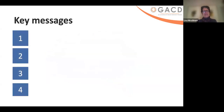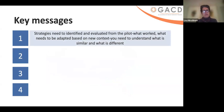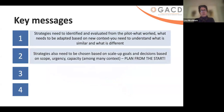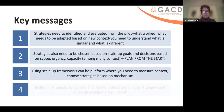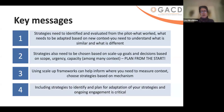Four key messages: Strategies need to be identified and evaluated from the pilot — what worked, what needs to be adapted, and based on the new context, what needs to be similar, what's different, and what needs to change. Strategies also need to be chosen based on your goals and decisions based on scope — is this for everybody, just in urban settings, the urgency (remember COVID), and capacity among many things. Plan for this even when starting your pilot. Using scale-up frameworks that resonate with you can help inform where you need to measure context and choose strategies based on your mechanism. Finally, include strategies to identify and plan for adaptation of your strategies and ongoing engagement — who needs to be engaged, how often, not just at the beginning but throughout, to understand where the gaps are and who needs to agree to the adaptations you're planning.